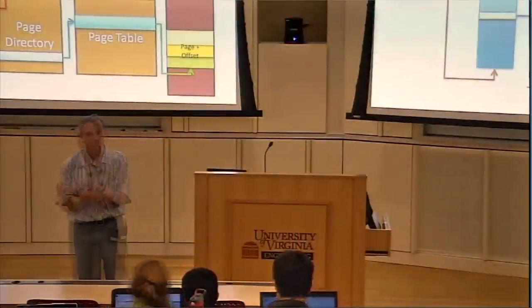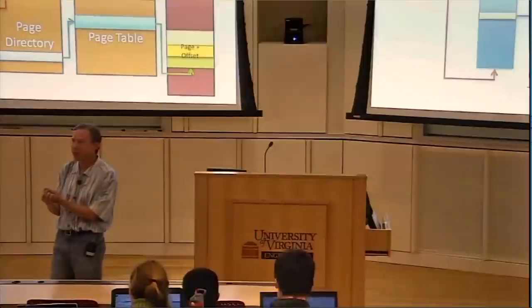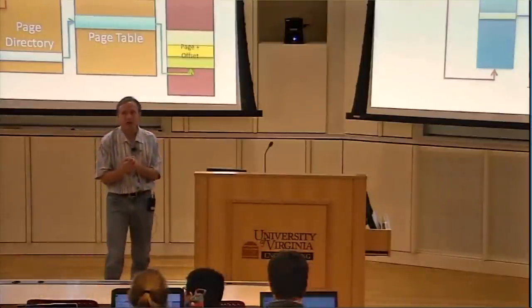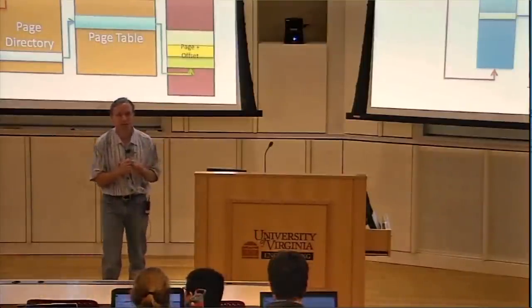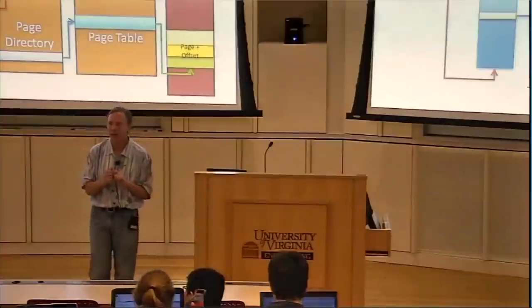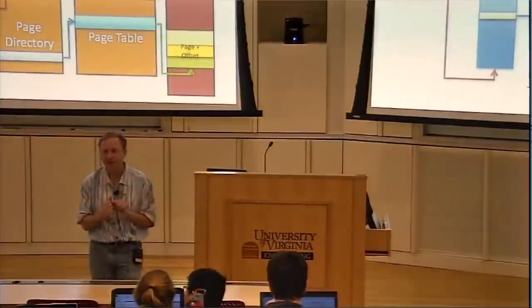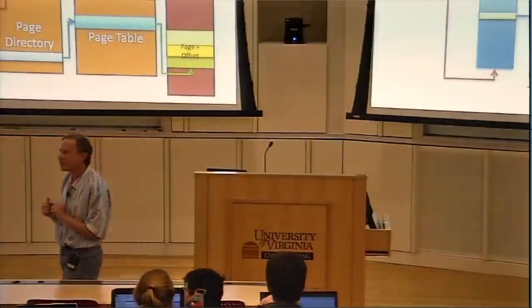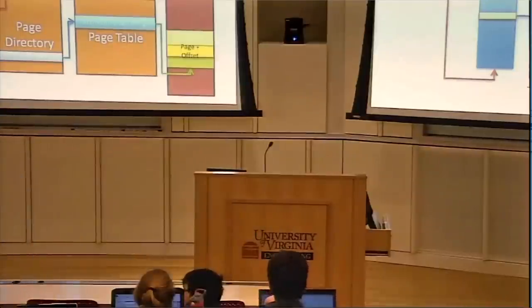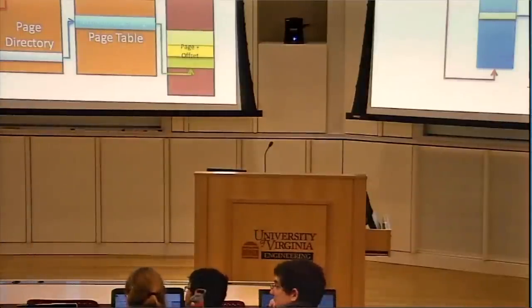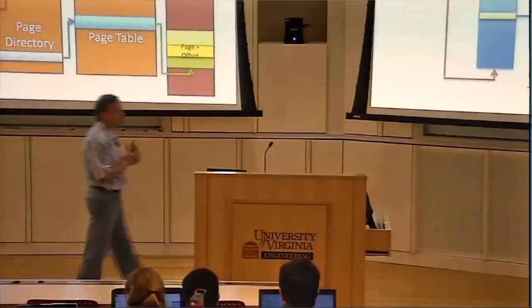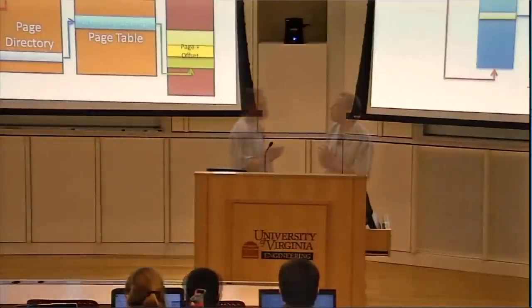When do we have to not use the old mappings that might be in that cache? So remember, what was our overall goal for this part of the lecture, most of the class today? Do I need to go back to the beginning? Yeah. So what is our goal? What are we trying to provide with all of this mechanism? Excellent, right? So we're trying to provide memory isolation so one process can't interfere with the memory of another process. So when do we need to flush that cache?